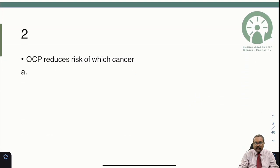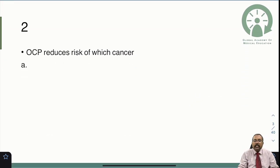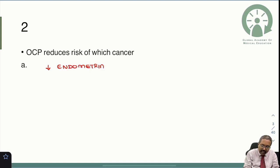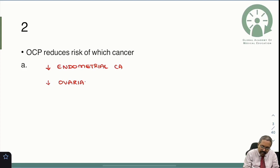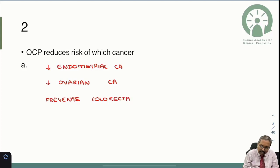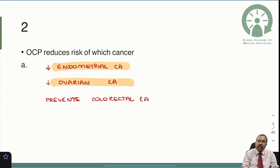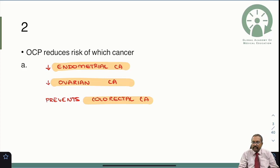The second question asked was: oral contraceptive pills can reduce the risk of which cancers? Please remember oral contraceptive pills reduce the risk of endometrial carcinoma, ovarian carcinoma, and also help in prevention of colorectal carcinomas. If this was in the option, you should have selected endometrial, ovarian, or colorectal carcinoma.